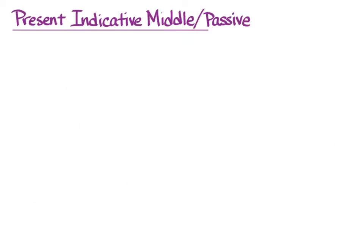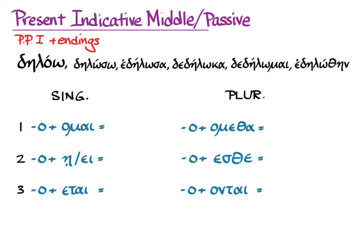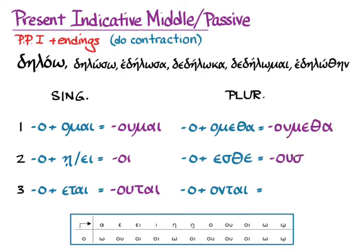Now for present indicative middle/passive: first principal part and endings. Of course, we're going to have to contract them with the omicrons. When we do the contraction, we get: oumai, oi, outai, oumetha, ousthe, and ountai. Notice that with either version of the second person singular — eta with iota subscript or epsilon iota — we still get the contraction oi. The accent will be recessive with contraction rules.